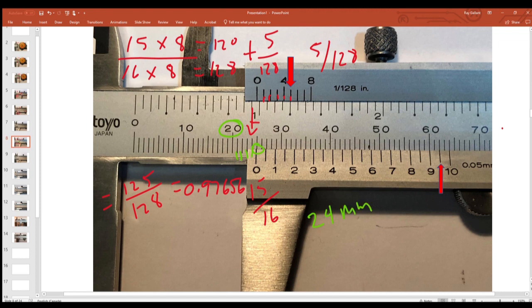And then we have 0.1, 0.2, 0.3, 0.4, 0.5, 0.9, 0.5, so 0.95. So 24.95 millimeter.